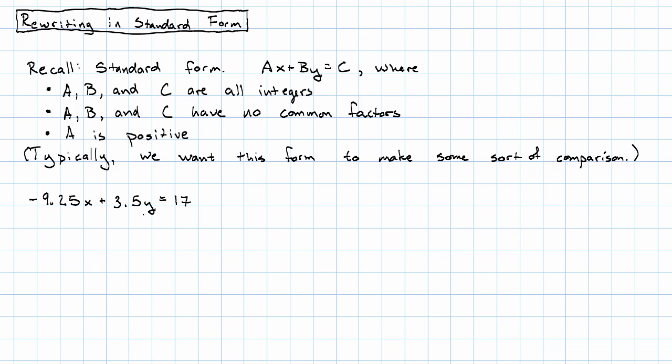Talking about common factors doesn't make sense, but when we get integers, we'll have those. And the first number isn't positive. So what do we do?